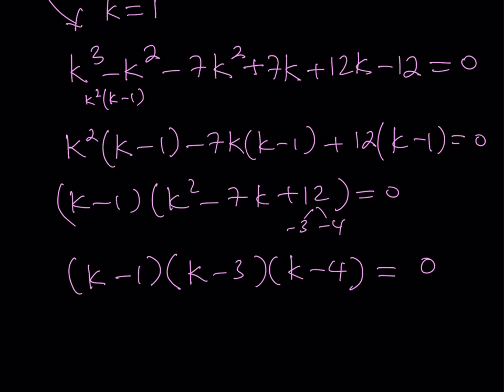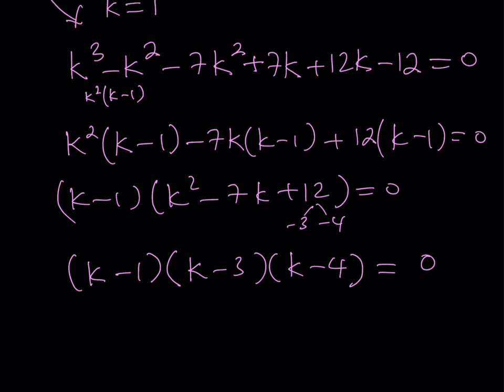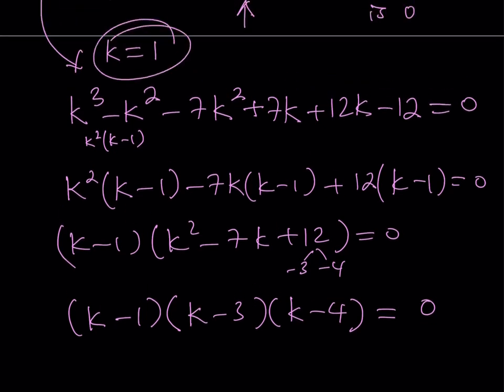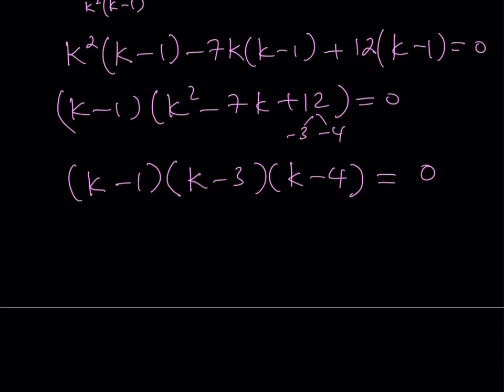I can write it as k minus 1 times k minus 3 times k minus 4 is equal to 0. I got the k values from here. I already knew that k equals 1, but I also got two other values. So now I got three k values.